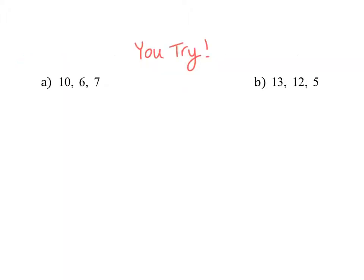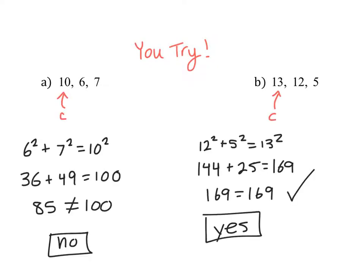Pause the video and give these problems a try. For the first one, make sure you used 10 as your C value. When you substitute into the Pythagorean Theorem and simplify, you get 85 equals 100, which is not true. So no, these are not the sides of a right triangle. For part B, 13 is our C value because it's the largest number. When you simplify, you get 169 equals 169, which is a true statement. So yes, these are the sides of a right triangle.